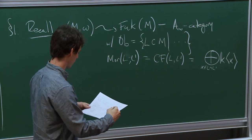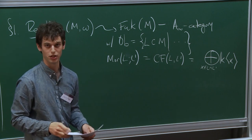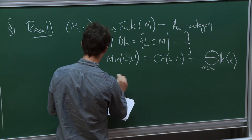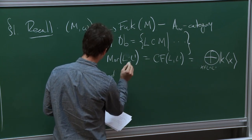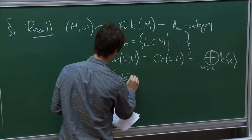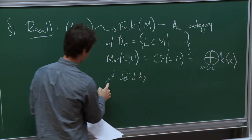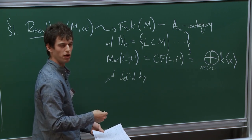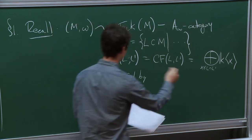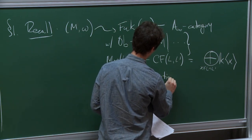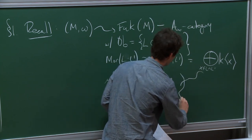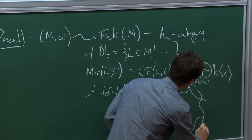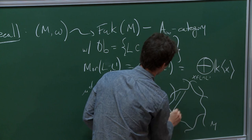The last thing I want to tell you about Fukaya is that there are composition operations that eat d inputs for d at least one, which is something any A-infinity category is required to do. The d-ary composition operation is defined by counting pseudoholomorphic (d+1)-gons. The images of these pseudoholomorphic polygons in M look something like this.